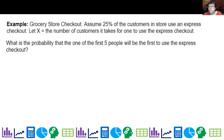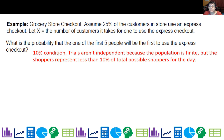Grocery store checkout: assume 25% of customers use an Express checkout. Let x equal the number of customers it takes until the first one uses it. What is the probability that one of the first five people will be the first to use Express checkout? The trials aren't independent because the population is finite, but the shoppers represent less than 10% of total possible shoppers. p = 0.25, q = 0.75, and x = 1,2,3,4,5.